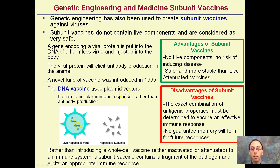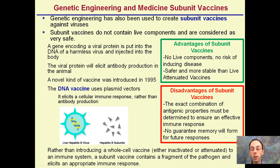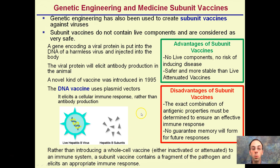The DNA vaccine uses plasmid vectors and elicits a cellular immune response rather than antibody production. Because we're not getting antibody production, we're not getting super long-term effects, but we are getting short-term effects to get through flu season. It's a lot safer because rather than introducing the whole virus — live or inactivated — the subunit contains fragmented pathogens and essentially gets an effective, appropriate immune response.